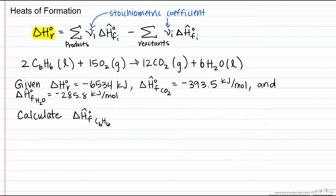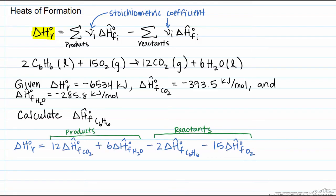We'll write this out in terms of what we know. So our heat of reaction is going to equal, now let's take a look at the stoichiometric coefficients. Coming out, we have 12 times the heat of formation of the CO2 plus 6 times, and these are the stoichiometric coefficients, the heat of formation of the H2O liquid.